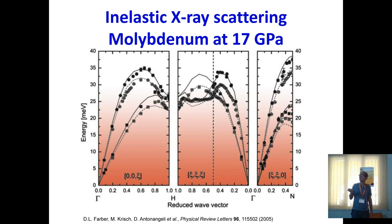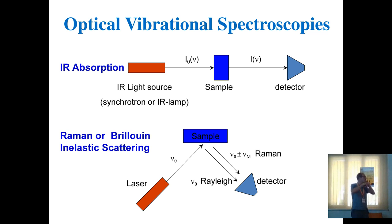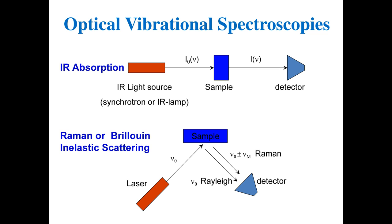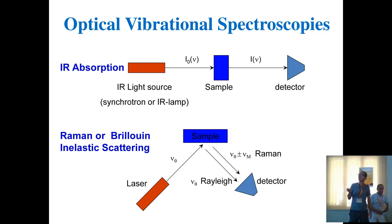I will concentrate on optical vibrations — infrared and Raman. The general principle of infrared absorption is simple: you put the sample in the beam, measure the attenuated transmitted beam, and use a reference when you have a complex environment like a diamond anvil cell with a pressure-transmitting medium. The source can be a synchrotron or an infrared lamp — a synchrotron emits across all wavelengths including infrared.